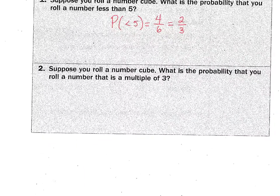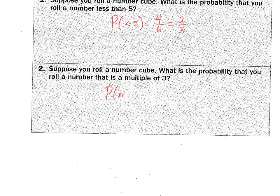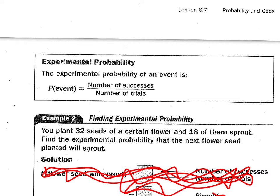Number two, it wants to know, what's the probability that you roll a multiple of three? So I write probability of a multiple of three. How many numbers on a number cube are multiples of three? Two. They are three and six, right? Out of how many? Out of six. And what does that reduce to? One third.